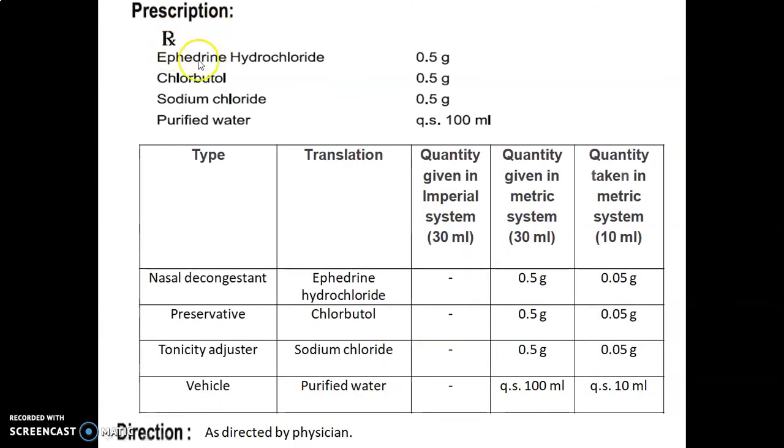Prescription is given over here. Let's discuss the formulation table. Type - that is use of ingredient. Translation means name of ingredient. Quantity given in the imperial system for 30 ml, quantity given in the metric system for 30 ml, and quantity taken in the metric system for 10 ml.